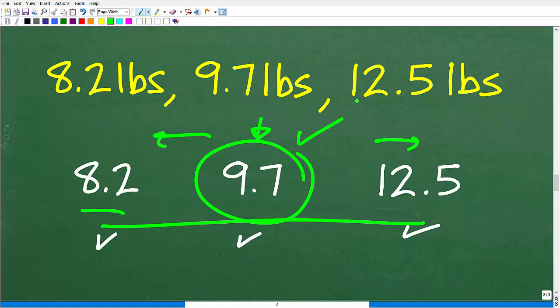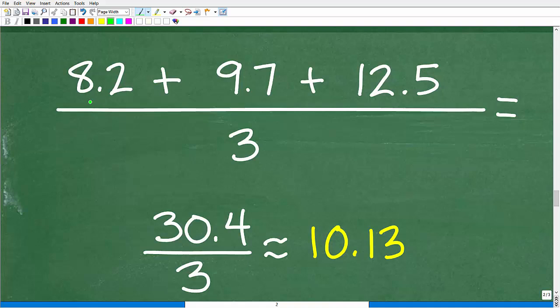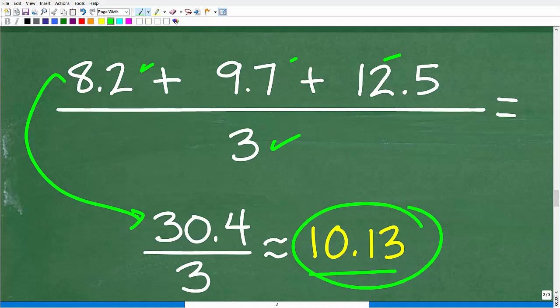So let's go ahead and do that, and then we'll compare it to 9.7 to see which number is greater. So we're just going to simply add these numbers up, 8.2 plus 9.7 plus 12.5. All that's going to be equal to 30.4. That divided by 3, because there's 1, 2, 3 numbers, is approximately 10.13. So we can see here that our mean of 10.13 is greater than our median of 9.7.